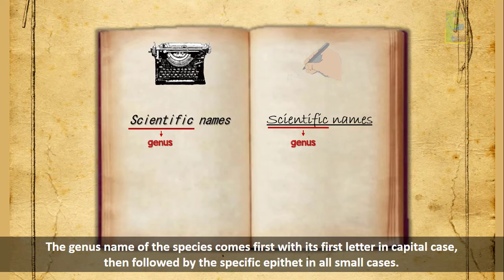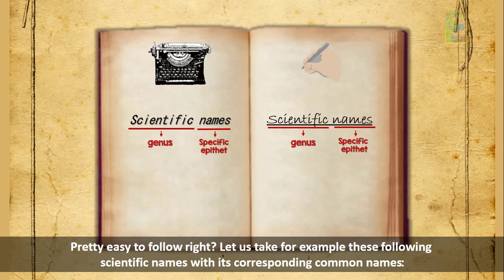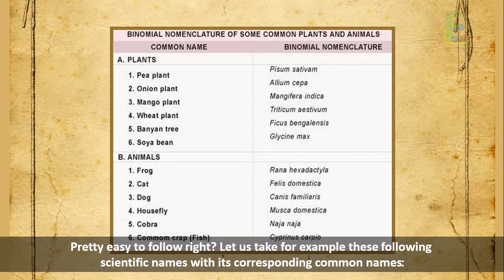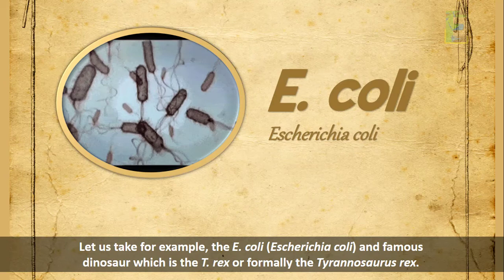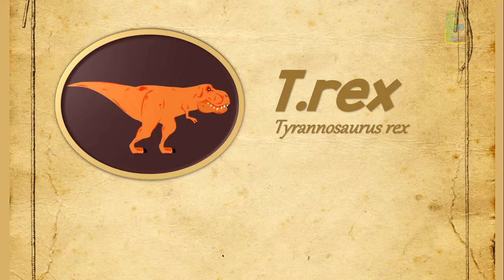The genus name of the species comes first with its first letter in capital case, then followed by the specific epithet in all small cases. Pretty easy to follow, right? Let's take for example these following scientific names with their corresponding common names. Also take note that scientific names can be written by abbreviating the genus name to its first letter in capital, for example E. coli, and the famous dinosaur T. rex, formerly Tyrannosaurus rex.